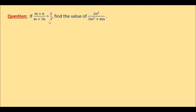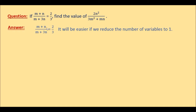So what do we do? Let us see what we can do. Since this expression contains two variables and will give us only a single linear equation, we will not be able to find the numerical value of either m or n. Therefore, let us reduce the number of variables to 1 — it will be easier if we reduce the number of variables to 1. How can we do that? Let us see.